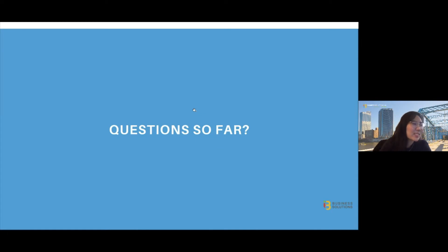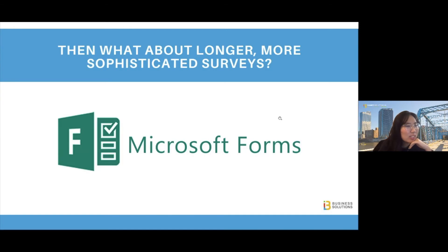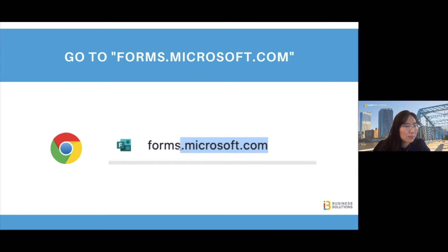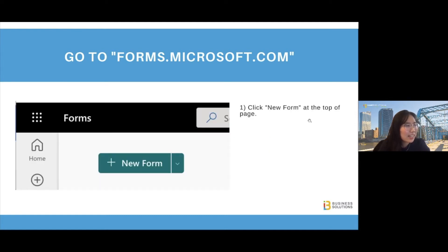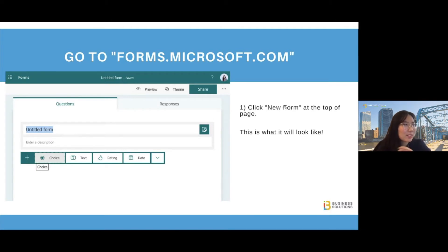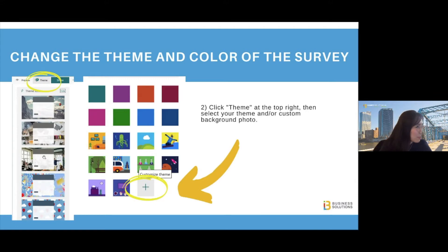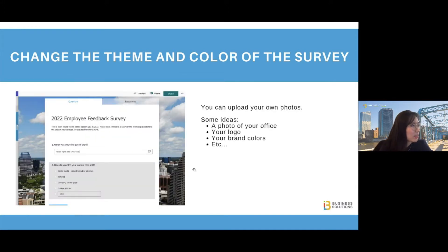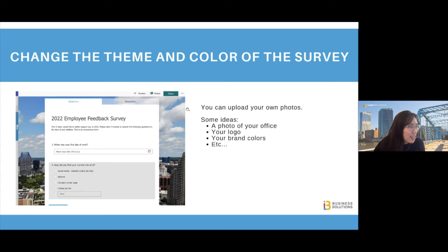Sometimes you want a longer survey, and that's when you use Microsoft Forms. Go to any browser and select forms.microsoft.com. Click 'New Form' at the top of the page. Before filling out your title and questions, I'd suggest starting with the theme. In the top right, there's a theme button — Microsoft gives you plenty of options including templates for parties, graduation, and office surveys, as well as colors. You can also customize your theme by uploading a team photo, your logo, brand colors, or any photo you like.